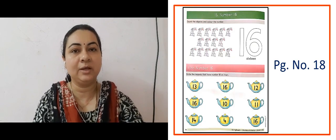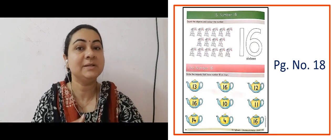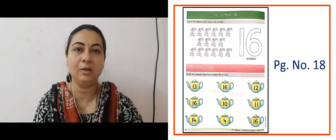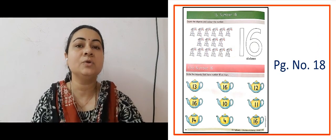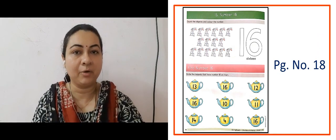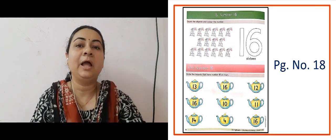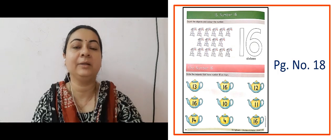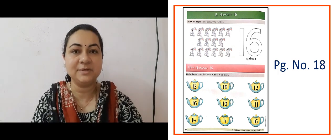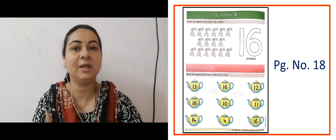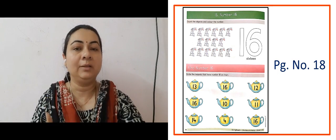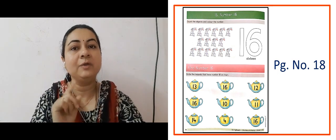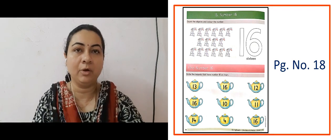The next slide is showing us number 16, on page number 18. Here what we did is we counted the number of rabbits. Then the outline of number 16 is given. So we have the number 16 and what we did is we circled that teapot.